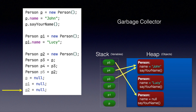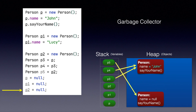What it does is it checks all the objects and sees if an object doesn't have a reference from the stack, then that object is marked for garbage collection, and the garbage collector can actually delete the object. Once deleted, it frees up the memory in the heap. This is how garbage collection happens behind the scene — as a programmer,